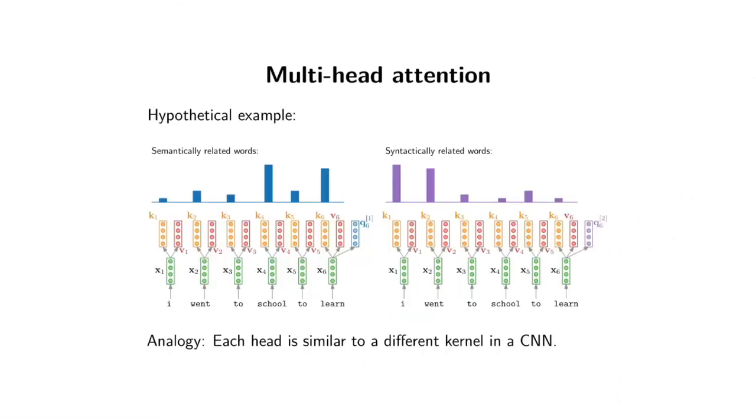I actually started with this example when we explained self-attention where you have an input sequence here and you're projecting each of them to a key, value, and query. Then what you do is you take the dot product of your query with each of the keys, that gives you a score, softmax that gives you a weight, you take the weighted average of your values and that's what pops out of your self-attention block.